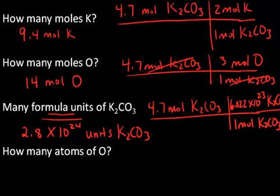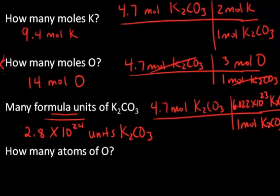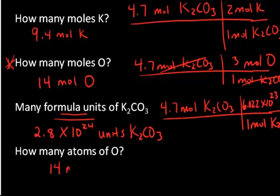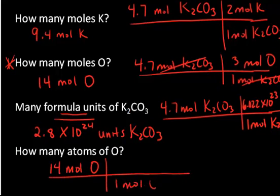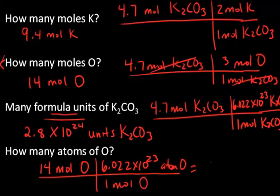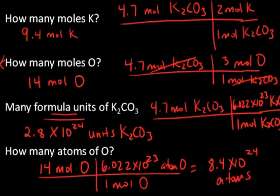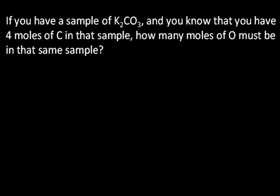The last question is how many atoms of oxygen are in that sample? We know we have 14 moles of oxygen in that sample. Since one mole of oxygen contains 6.022 times 10 to the 23rd atoms of oxygen, we can do the math and end up with 8.4 times 10 to the 24th atoms of oxygen. That gives you a feel for all the different types of conversions we can do with the definition of a mole and molar ratios within a formula unit.